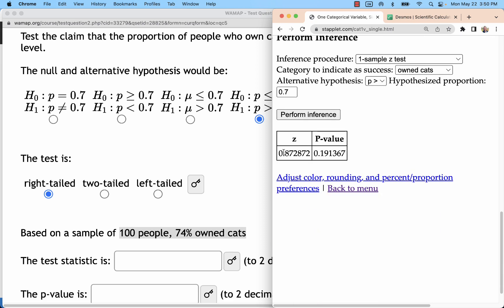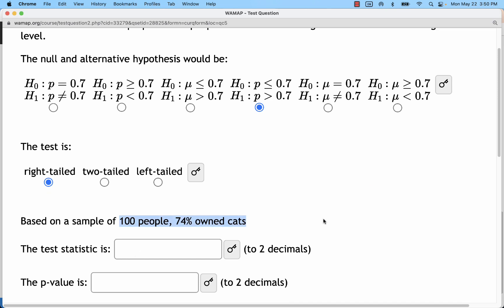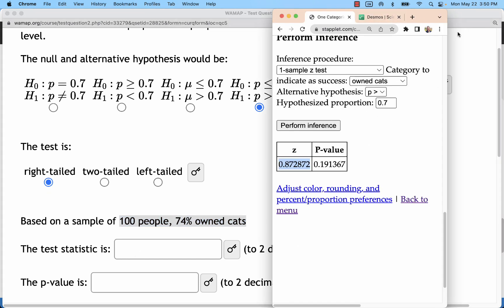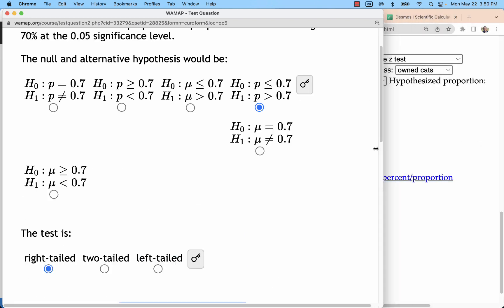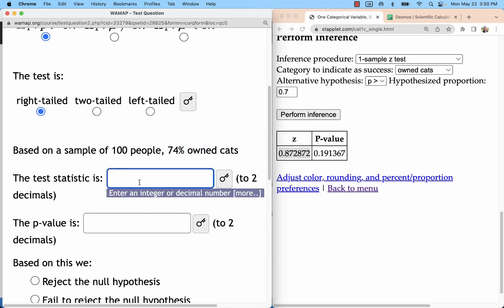And do my one sample Z test with a right tail pointed to the right of 0.7. I have a kind of unremarkable Z score, because it's very close to 0. We would want to be two or more standard deviations away to be somewhat more remarkable.